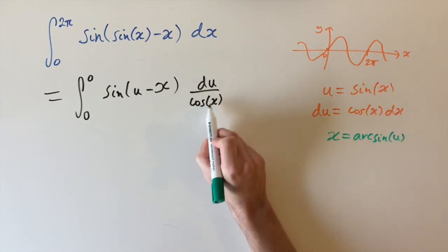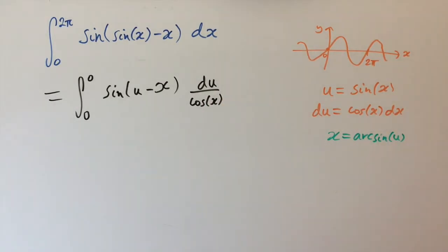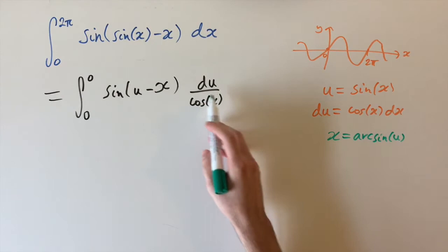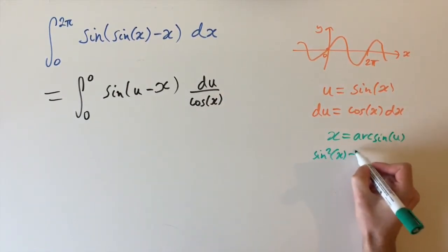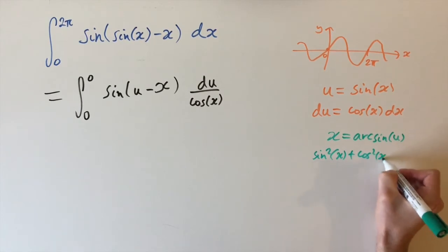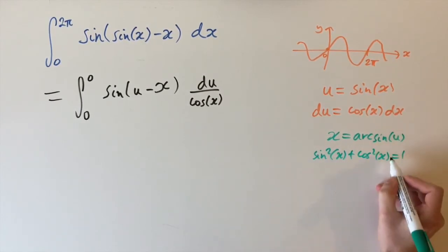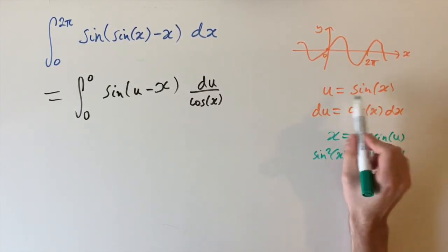And then we also need to express cos(x) in terms of u. And to do this, we need to remember the Pythagorean identity. So if you remember, we have sin²(x) + cos²(x) = 1. This relates sine and cosine. And we know how to express sine in terms of u.